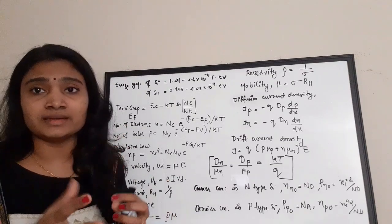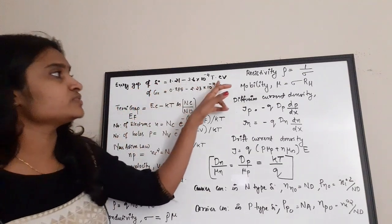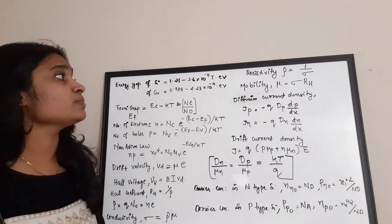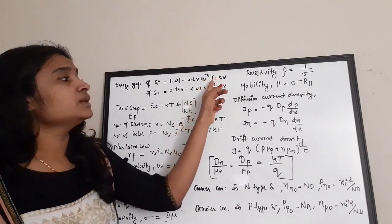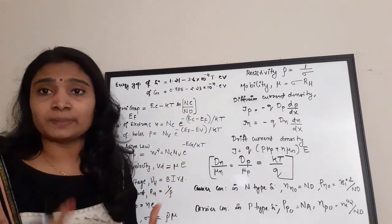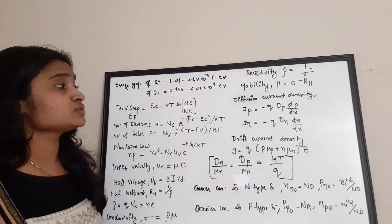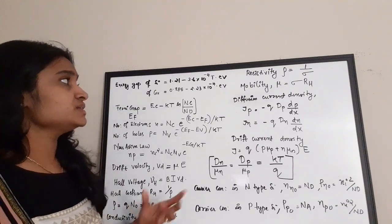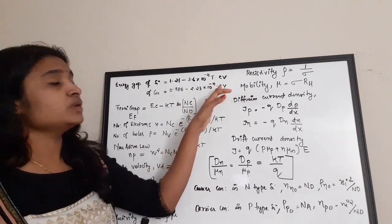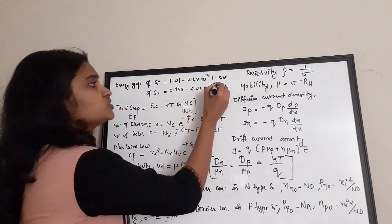For semiconductors, there is a valence band and a conduction band with a gap between them. The energy gap of silicon, written in terms of temperature, is: Eg = 1.21 − 3.6 × 10⁻⁴ × T electron volts, where T is in Kelvin. For germanium, it is: Eg = 0.785 − 2.23 × 10⁻⁴ × T electron volts.